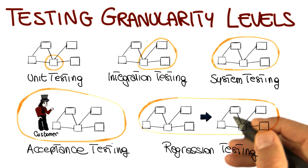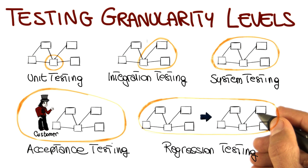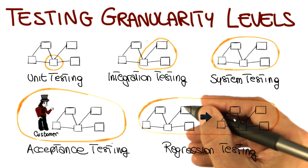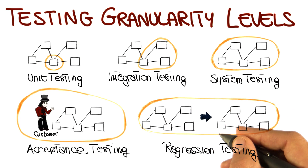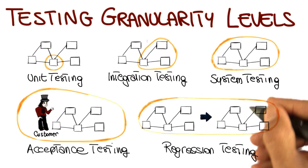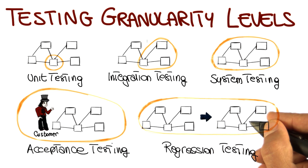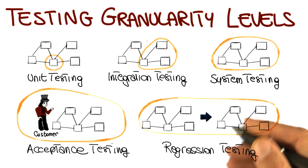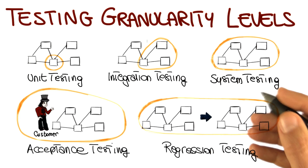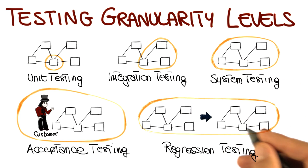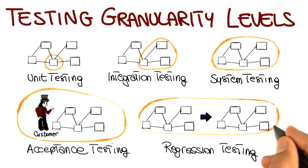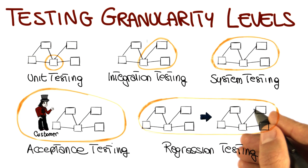What can happen when you modify the code is that parts of the code unrelated to the changes are actually affected by the changes and start misbehaving. We call those regression errors, and regression errors are very common.